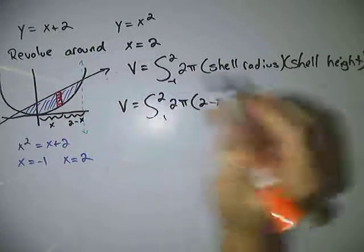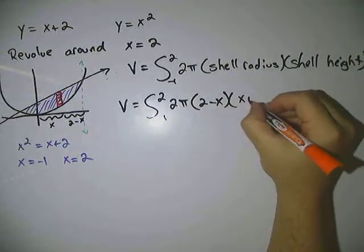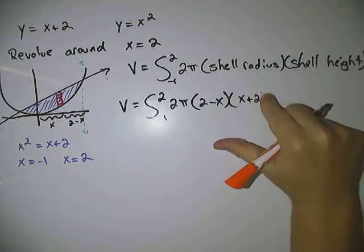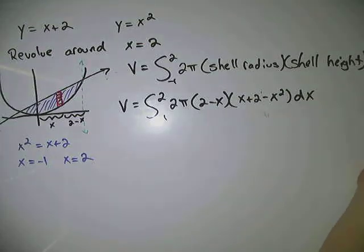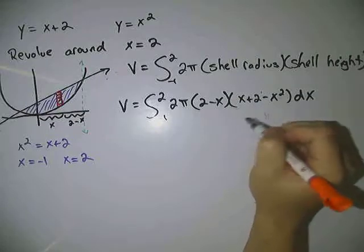Your shell height is going to be the top minus the bottom. The top function is x plus 2, the bottom is the x squared. So we've got x plus 2 minus x squared dx.